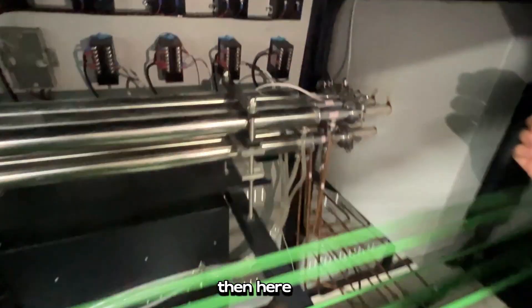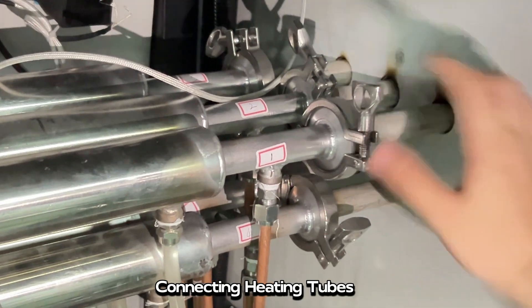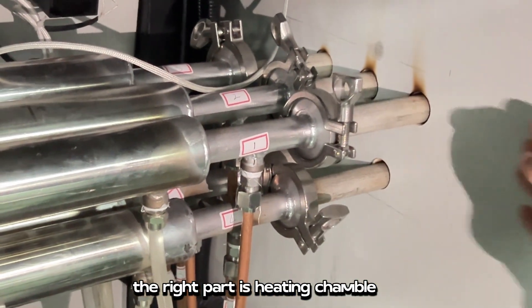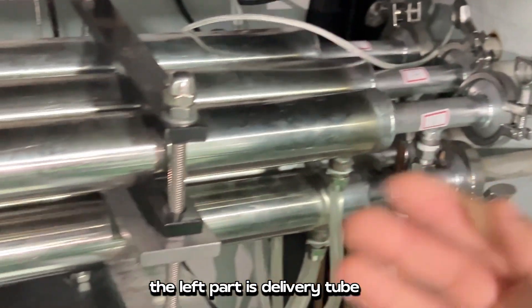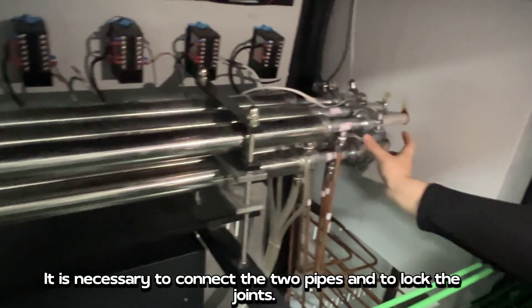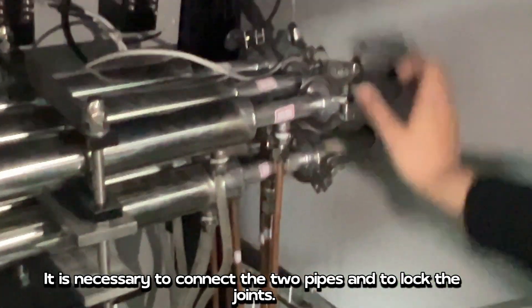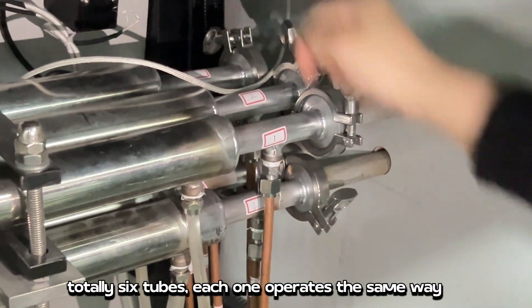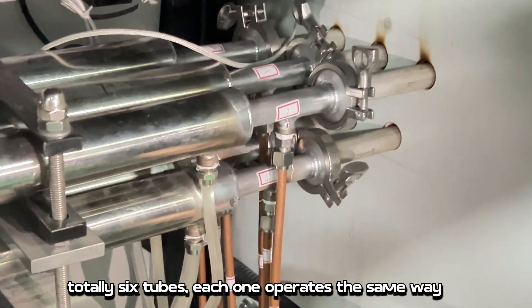Then here, connecting heating tubes. The right part is heating chamber. The left part is delivery tube. It is necessary to connect the two pipes and to lock the joints. Totally 6 tubes, each one operates the same way.